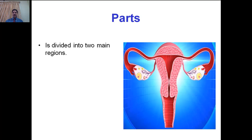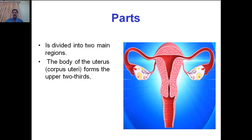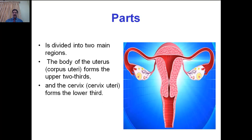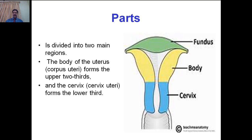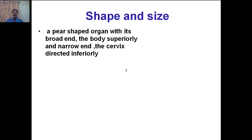The uterus is divided into two main regions. The body of the uterus, also called corpus uteri, forms the upper two-thirds, and the cervix forms the lower third. The parts of the uterus are: fundus, body, and cervix. As shown in this diagram, the upper two-thirds is formed by the body of uterus and the lower one-third is formed by the cervix.